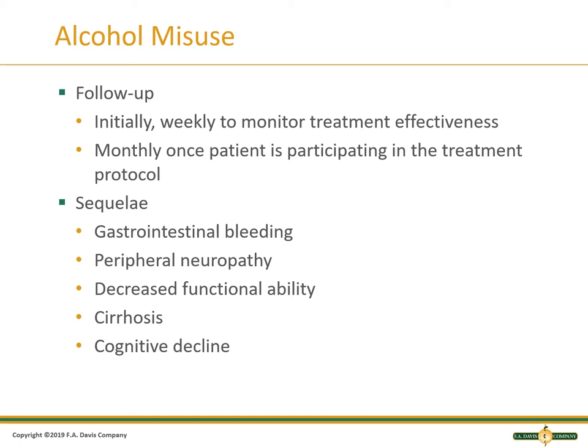Unfortunately, sequela we can see include GI bleeding, gastritis, peripheral neuropathy, decreased functional ability, and cognitive decline. You can start to develop hepatic encephalopathy secondary to liver disease and cirrhosis, where they'll have altered mental status. So treatment plans have to be adjusted based on that cognitive decline. Also be aware of polypharmacy with liver disease — medications like Tylenol are a concern for the liver, so we need to look at everything, including meds as needed.